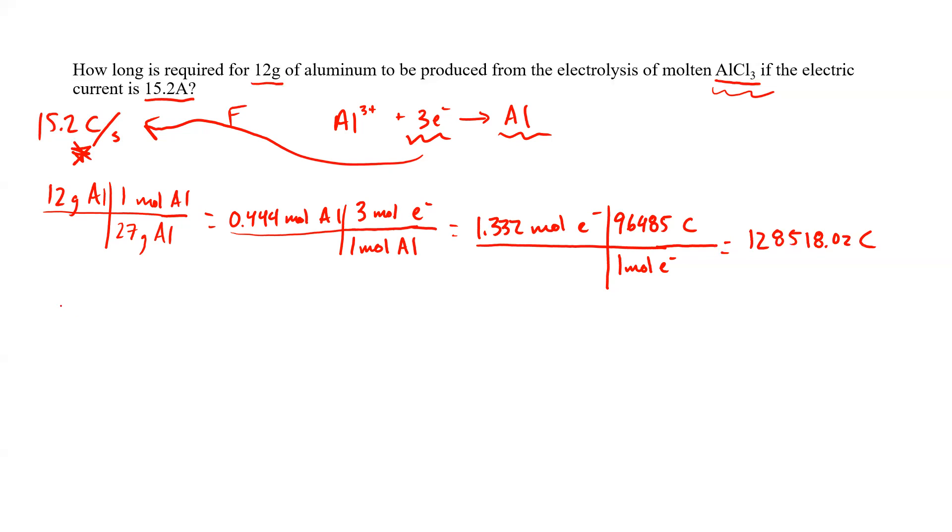So now what we want to do is relate our number of coulombs per second. So 128,518.02 coulombs. We have our amperage, which is 15.2 coulombs in one second.